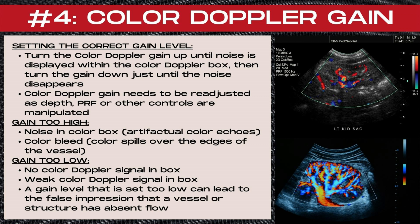Note that this color Doppler gain level will need to be readjusted as depth, PRF, and other controls are manipulated. If the color Doppler gain is too high, you'll see noise in the color box — artifactual color echoes that don't represent actual Doppler information — and you'll also notice color bleed, where color spills over the edges of a vessel. If the color Doppler gain is too low, there will be no or very weak color Doppler signal within the box, and a gain level set too low can also lead to the false impression that a vessel has absent flow. Setting the correct color Doppler gain is one of the most essential things you do when first using Doppler.